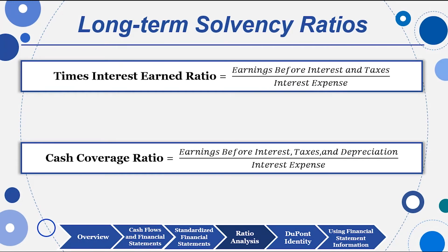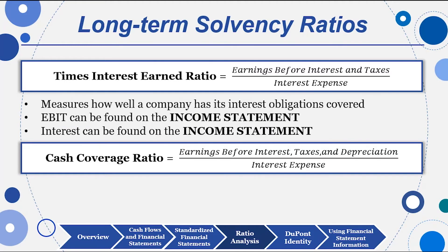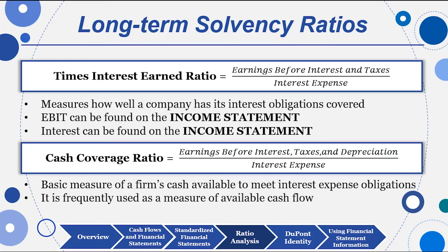Times interest earned is EBIT — earnings before interest and taxes — from the income statement, divided by interest expense from the income statement. It tells you how many times your EBIT covers your interest expense. Cash coverage is also EBIT over interest expense, measuring how much cash is available to meet interest expense obligations — a measure of available cash flow.